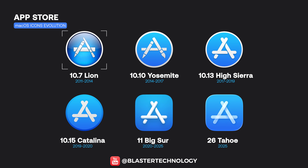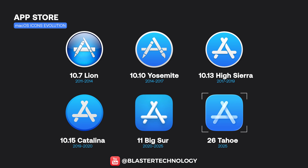The App Store icon began as a glossy, aqua-style symbol in version 10.7 Lion, was radically simplified with Yosemite, and starting with Big Sur adopted a square shape with rounded corners. It was further refined into the clean and balanced version seen in macOS Tahoe.